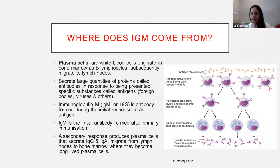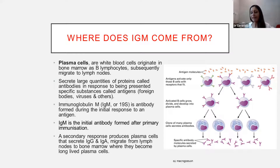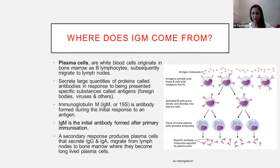IgM is also the initial antibody formed after primary immunization. Once these cells are exposed, they secrete the IgM, they learn what to do, they become more mature and turn into full plasma cells that secrete IgG and IgA. That's the second stage of maturation. Then they migrate from the lymph nodes back to the bone marrow where they were born and become long-lived plasma cells, ready to produce IgG and IgA when needed.